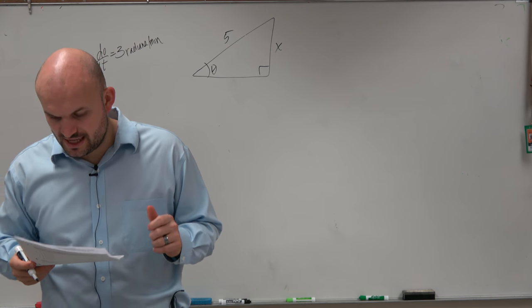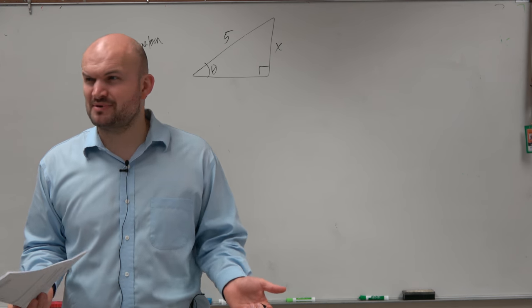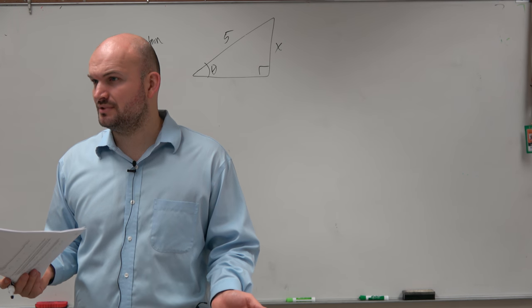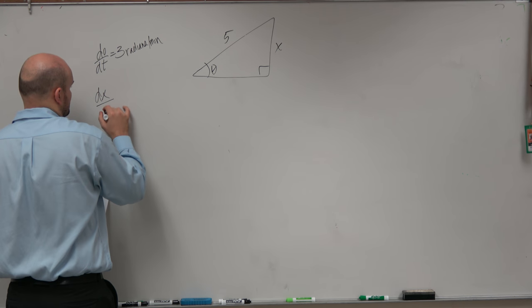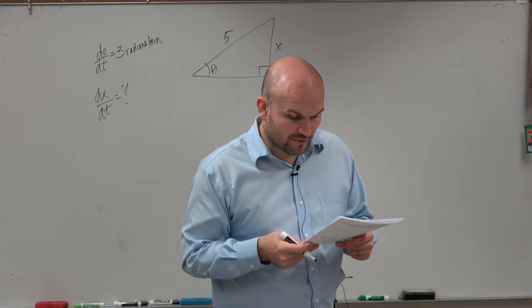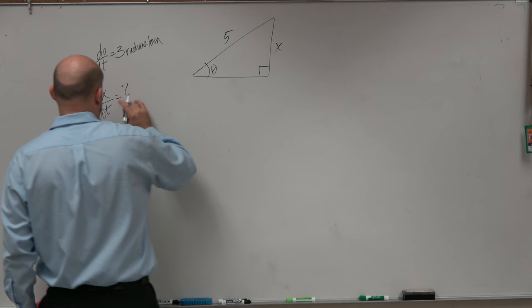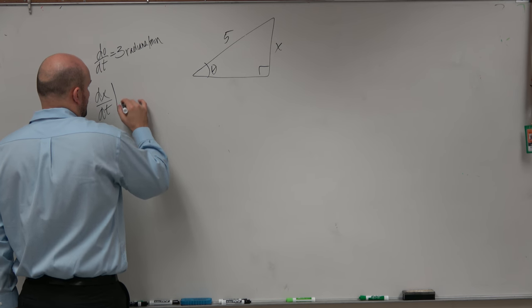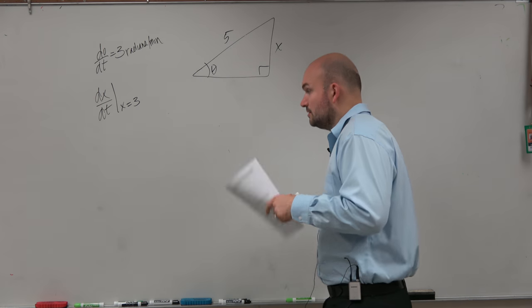And let's say, at what rate is x increasing? So how can we represent x increasing? dx dt. So we're looking for dx dt, right? That's what we're going to try to find. At what rate is dx dt increasing in units per minute when x is equal to 3 units? So we're actually trying to find dx dt when x equals 3, right? 3 units.